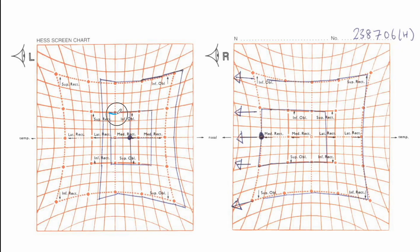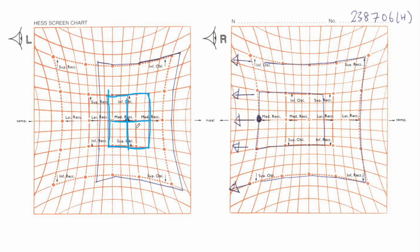While interpreting this particular chart we first need to determine which eye is the one which is involved. We look at the inner square, and if you see how the inner square is plotted in the left eye, you see it is completely plotted, whereas when you go to the right eye the inner square extends beyond the chart, which instinctively shows us that the problematic eye is the left eye and not the right.